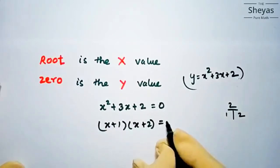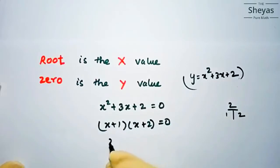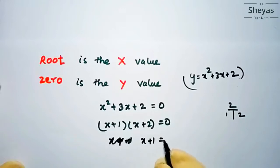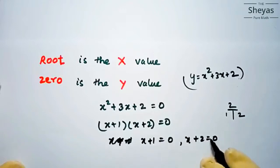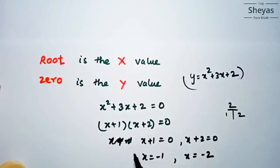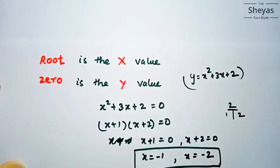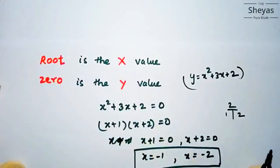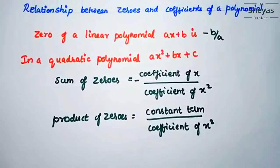Setting x plus 1 equal to zero and x plus 2 equal to zero, we get x equals minus 1 and x equals minus 2. So the roots obtained are x equals minus 1 and x equals minus 2. The root is the x value and zero is the y value — we call these zeros.